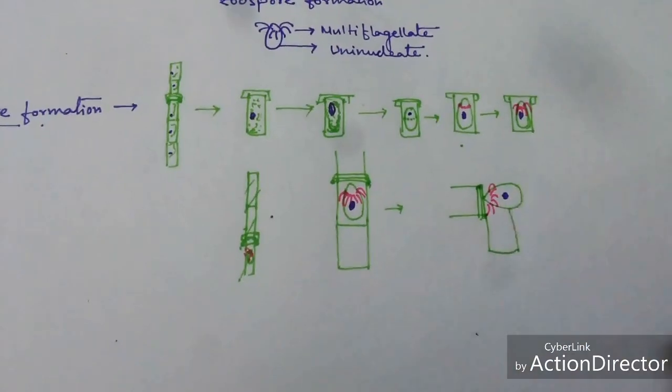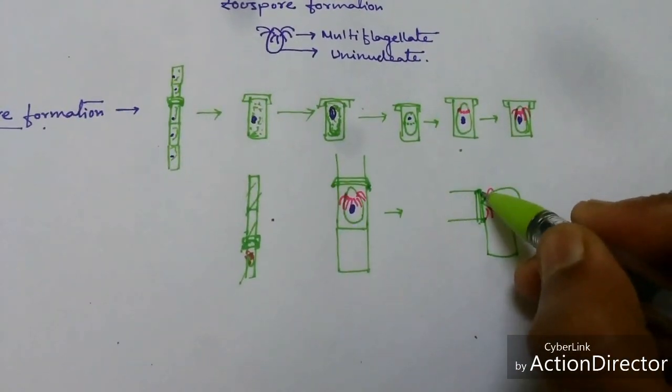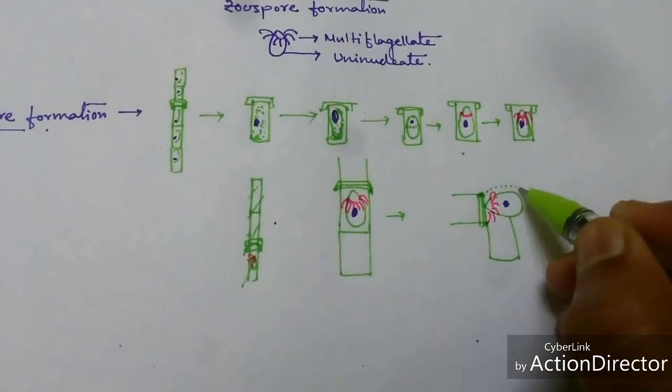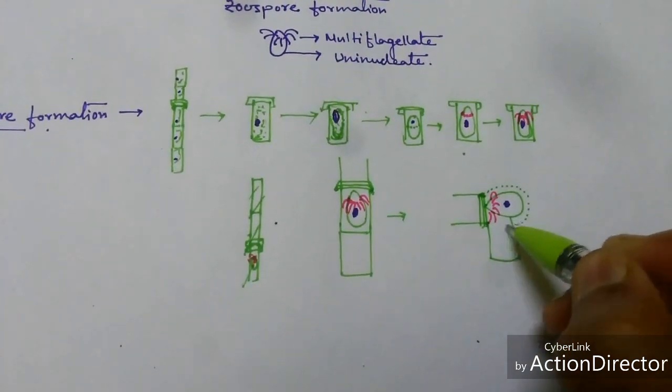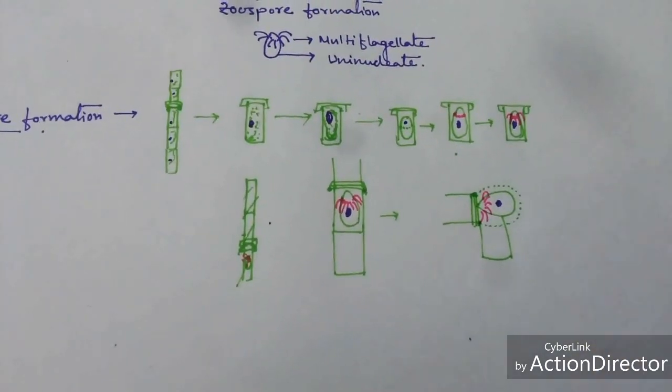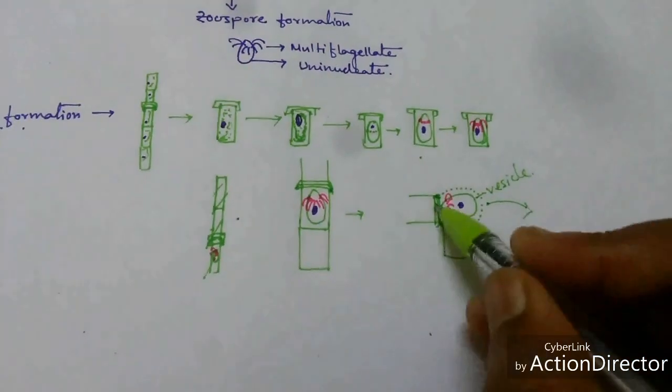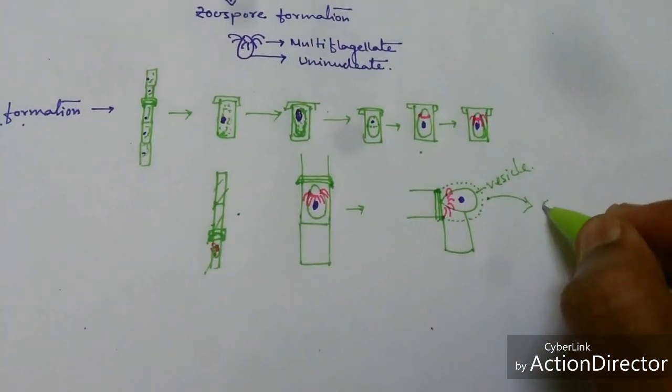At the initial stage, the zoospores are surrounded by a mucilaginous sheath which is called vesicle. Now after being removed from this area, the vesicles are released from the thallus.